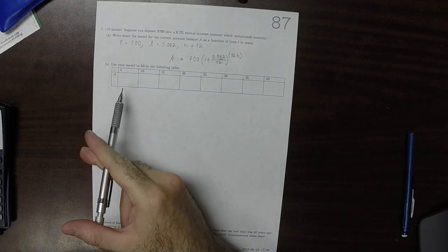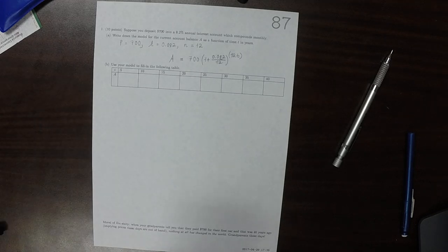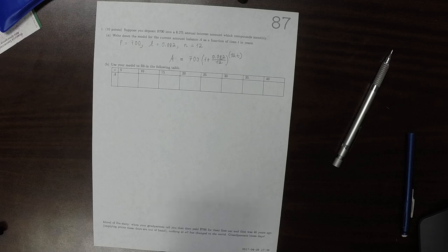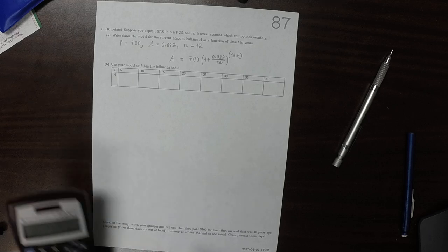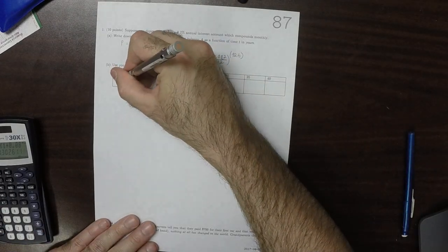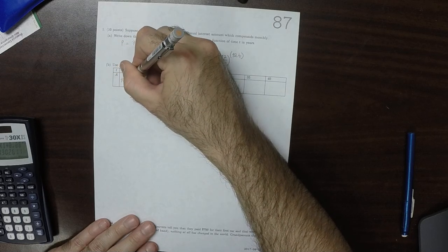So in part B, we're supposed to plug in all of these years: 5, 10, all the way up to 40. 700 times 1 plus 0.082 over 12, with exponent 12 times 5. So this is saying 1053.30.